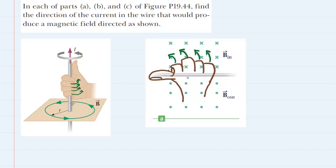In part A, the wire is running horizontally across the screen. They've indicated that the magnetic field is pointing into the page above the wire, symbolized by these crosses, and then the magnetic field is pointing out of the page below the wire, as symbolized by these dots. We've attempted to draw a right hand grasping the wire. You will notice that the four fingers are curling into the page above the wire. The perspective we're looking at is the back of the hand.